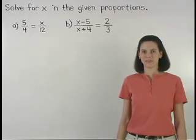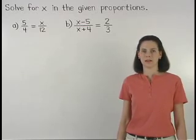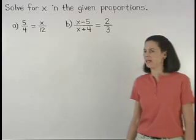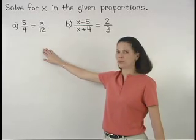To solve for x in each proportion, we simply use the means extremes property. So, in part A, since 5 over 4 equals x over 12,